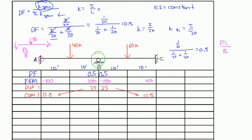In this case, we only had to do one distribution cycle. If you sum the moments on the left side of joint B, you get 100 plus 25 equals 125. And if you sum the moments on the right side, you get negative 150 plus 25 equals negative 125. So you have 125 on the left and negative 125 on the right — equal in magnitude and opposite in direction. That means the moments at joint B are finally balanced and distributed properly, so we only needed one cycle.